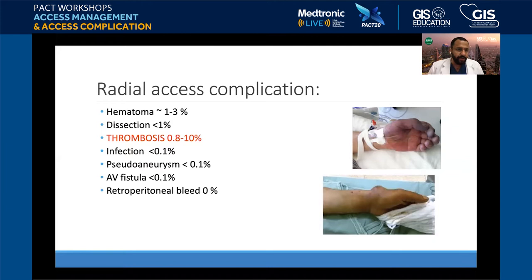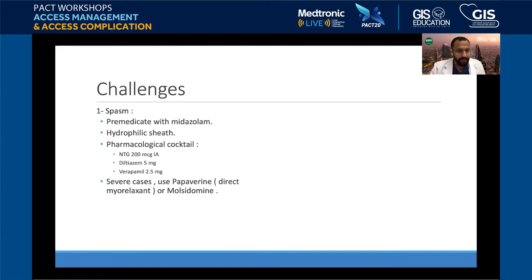Retroperitoneal bleed related to radial access itself is zero percent. However, spontaneous retroperitoneal bleed can happen with anticoagulation. If the patient is hypotensive after a procedure, retroperitoneal bleed should still be on the differential — don't exclude it just because you used radial access. Regarding spasm — it was a major issue with radial access and caused many older-generation interventionalists to avoid adapting it as their default.